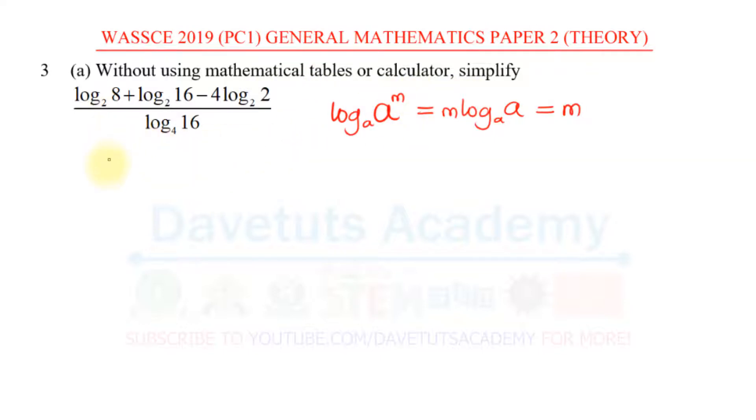We are going to have log to base 2 of 8, which is the same as log to base 2 of 2 raised to power 3, because 8 is 2 raised to power 3. Then plus log to base 2 of 16 will be log to base 2, and 16 is 2 multiplied by 2 in 4 places, so that would be 2 raised to power 4.